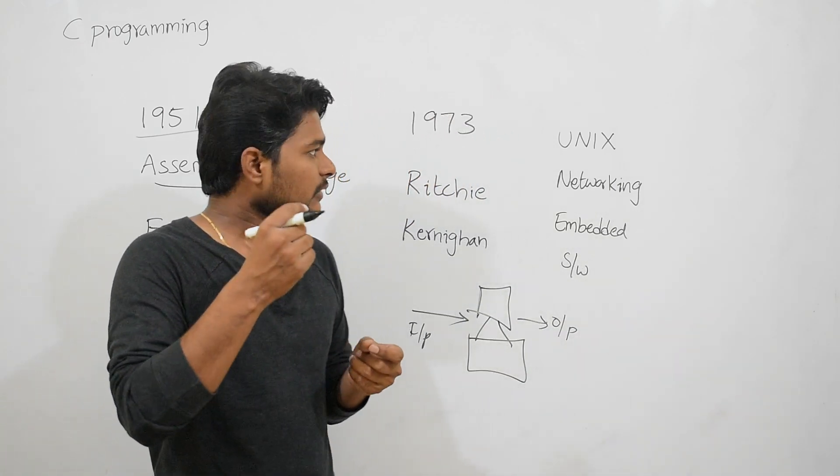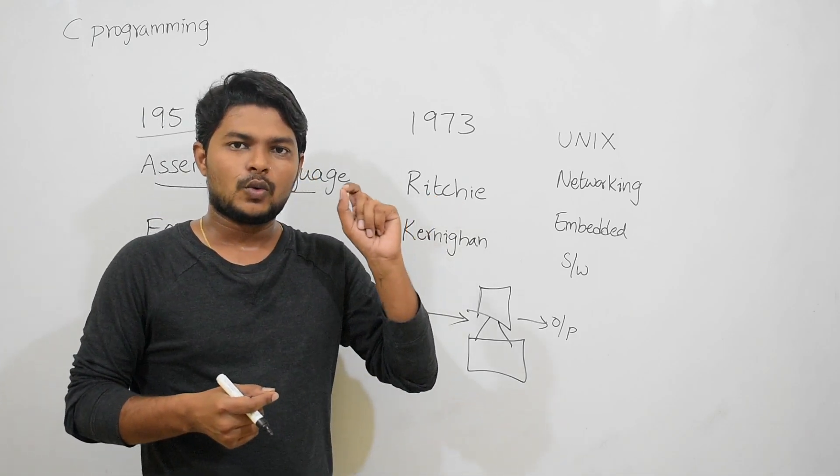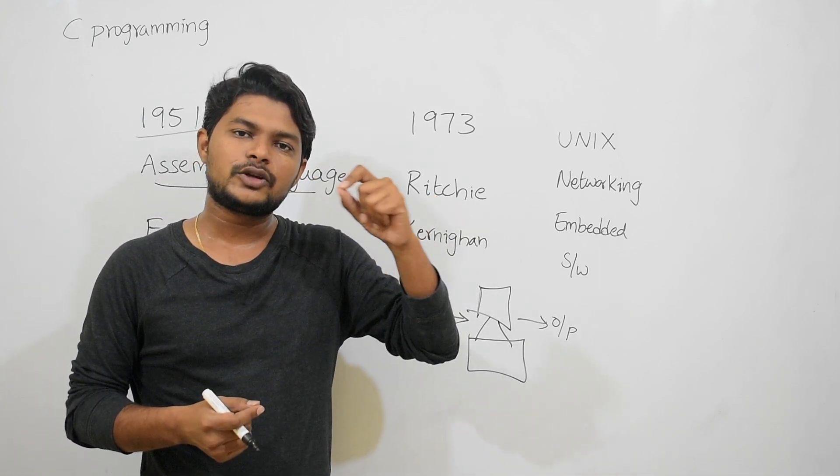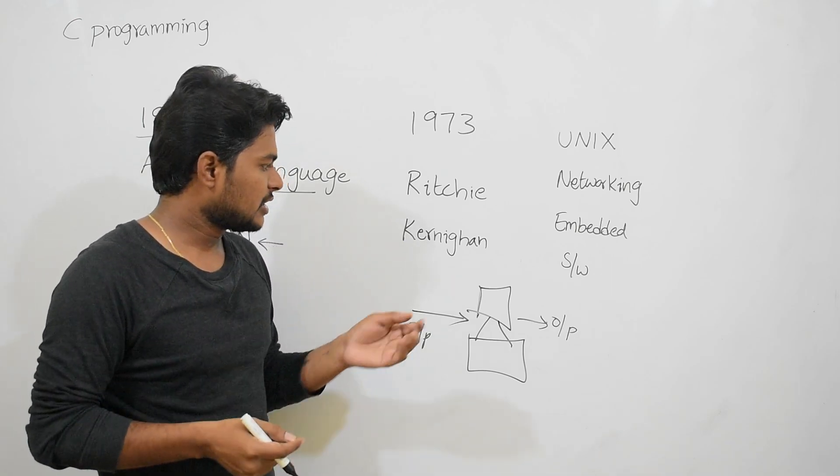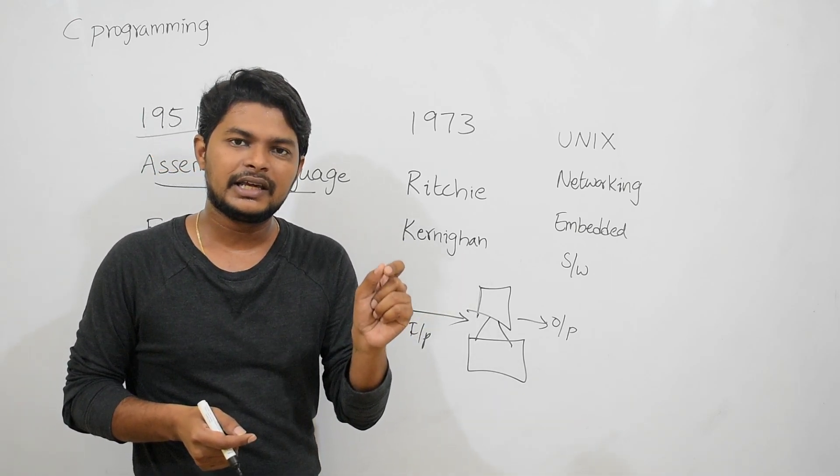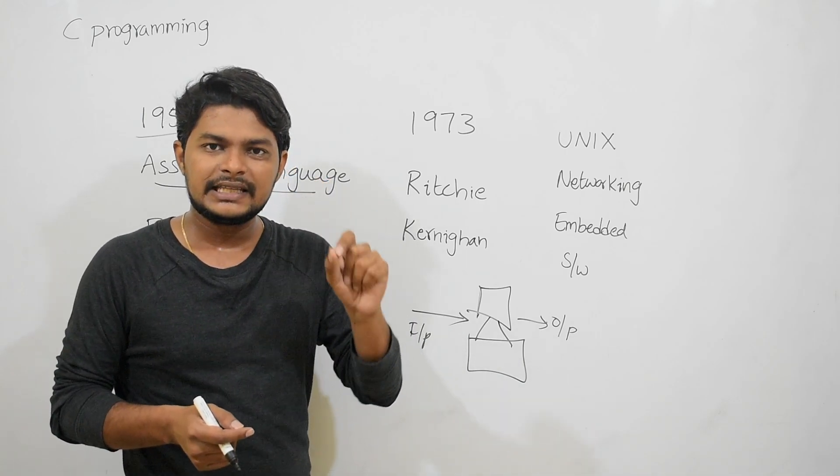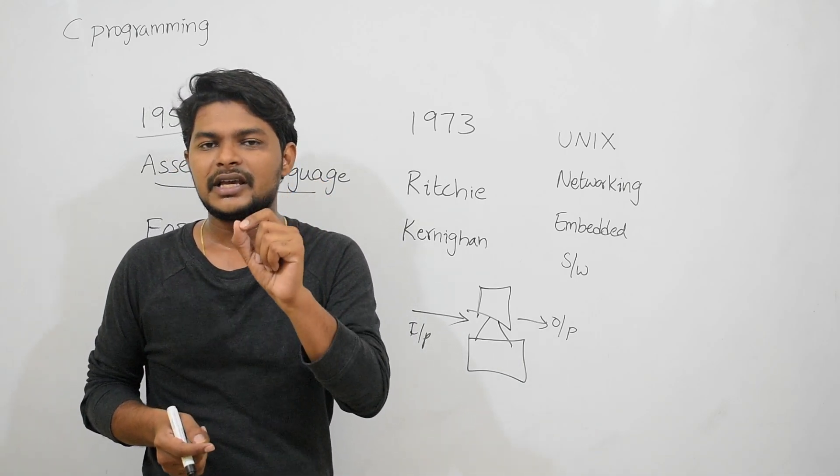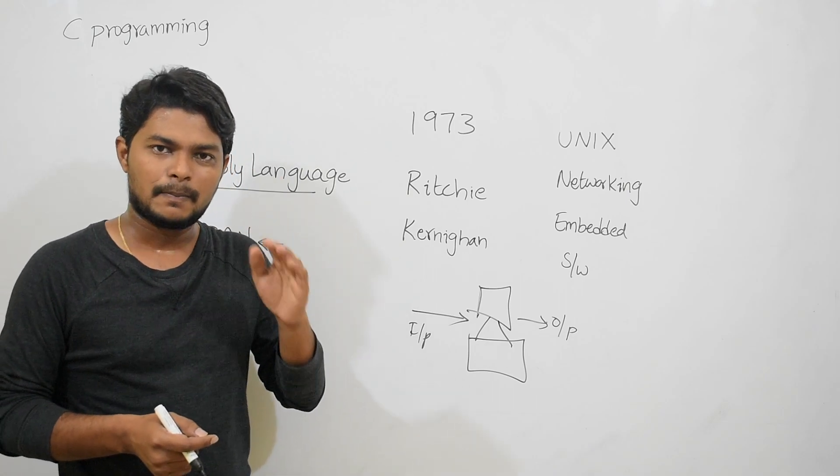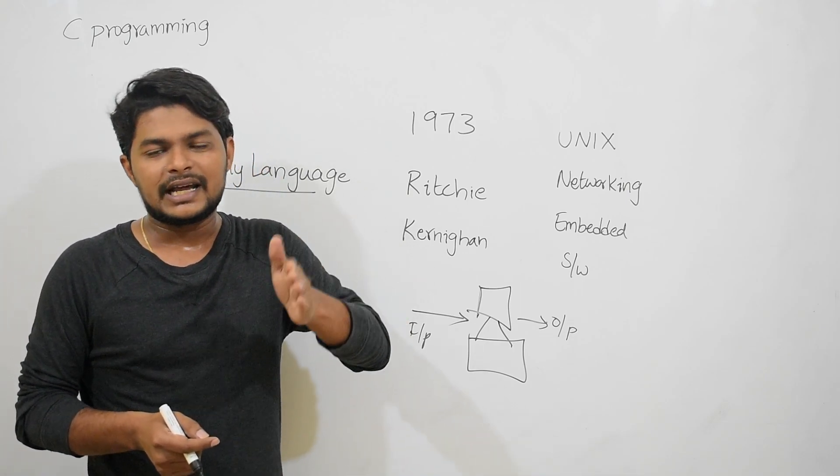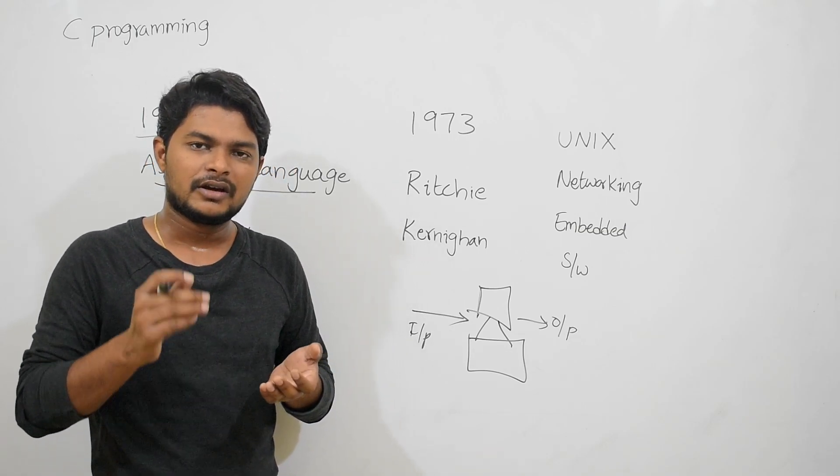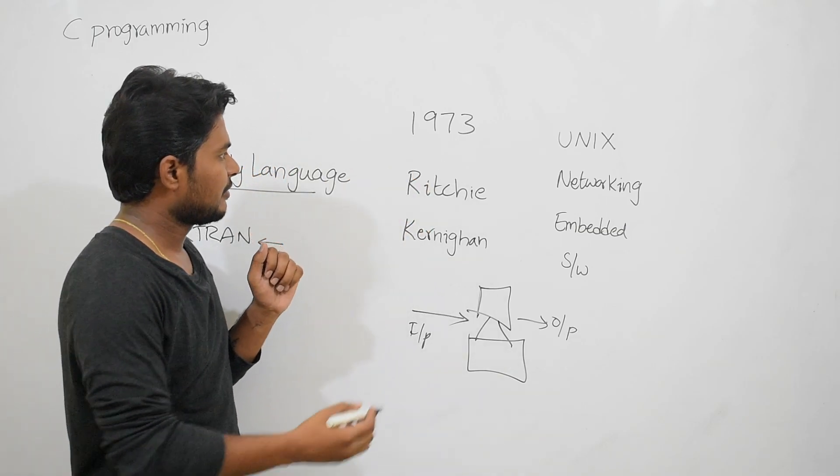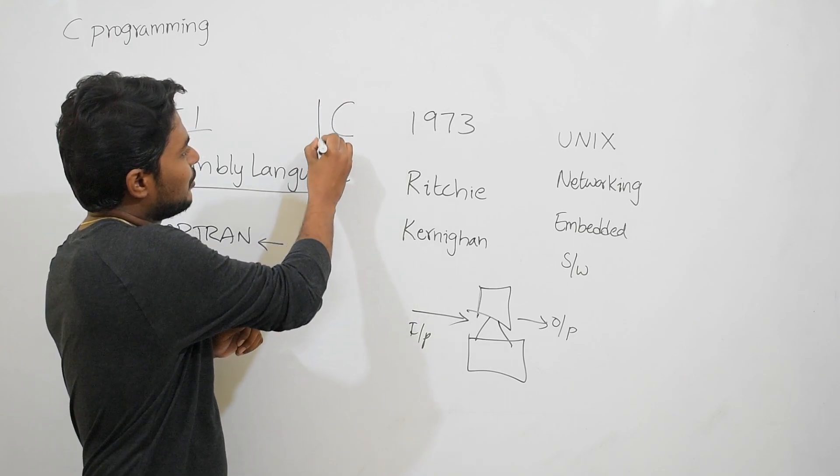At that time, a person named Dennis Ritchie wanted to rewrite the entire Unix operating system in a simple language. He, along with his friend Kernighan, both working at AT&T Bell Laboratories, invented C programming language in 1973. Before 1973, for five years they struggled and kept working for inventing C programming language. This is our hero today.